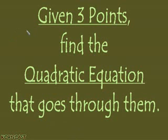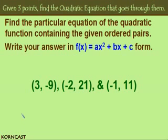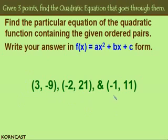In this screencast, we're going to be given three points and asked to find the quadratic equation that goes through them. We're going to find a particular equation of the quadratic function containing the given ordered pairs: (3, -9), (-2, 21), and (-1, 11). We're going to write our answer in standard form with function notation.